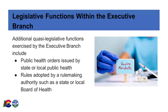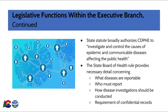Both state and local boards of health are empowered to adopt rules to implement their statutory powers and duties. Local public health rules must not be inconsistent with state public health laws. An example of the quasi-legislative rulemaking authority can be found in the state law that requires CDPHE to investigate and control the causes of epidemic and communicable diseases affecting the public health. This broad power and duty has been implemented through the adoption of a rule by the State Board of Health that currently has 16 pages of content, including what diseases are reportable, who must report, how disease investigations should be conducted, and the requirement that the work and records remain confidential, among other topics.